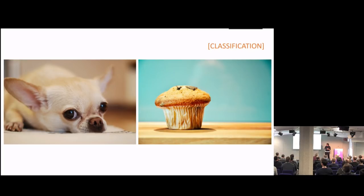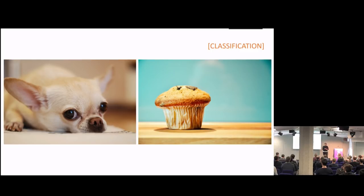So, raise of hands — we got a chihuahua and a muffin, who thinks this is the chihuahua? Pretty intelligent crowd. Think for a moment about how did you know that was the chihuahua, because that is the correct answer. Either you've seen enough dogs to know this is a dog and this is not, or if you're like me, you've seen enough muffins to know that this is a muffin and that is not.